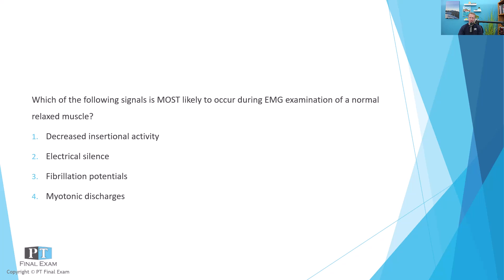Which of the following signals is most likely to occur during EMG examination of a normal relaxed muscle? One, decreased insertional activity. Two, electrical silence. Three, fibrillation potentials. And four, myotonic discharge.